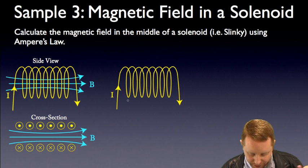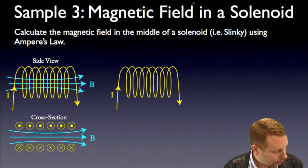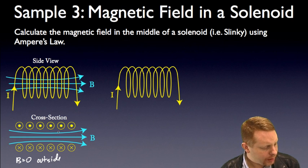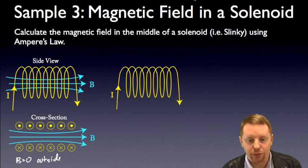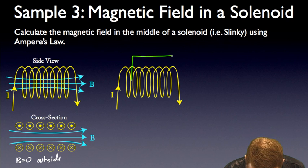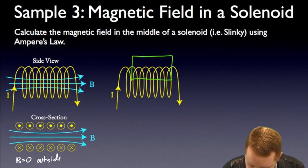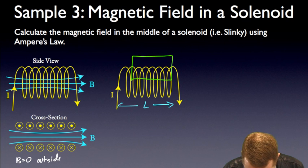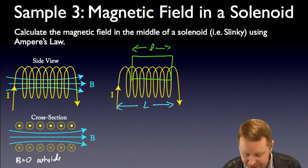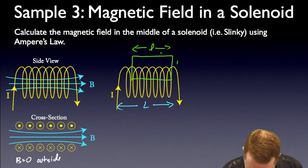There we have our solenoid, and we're going to assume that B equals 0 outside. What I'm going to do now is draw a closed loop. In this case, to make things simple, I'm going to draw a closed loop that looks like that. We can use any closed loop. Let's assume that L is the total length of our solenoid, so little l is this dimension. Let's label the sides of our path here: side 1, side 2, side 3, and side 4 inside.